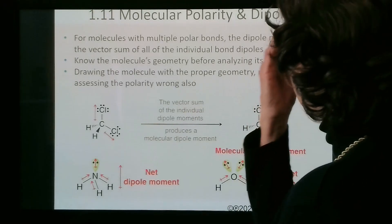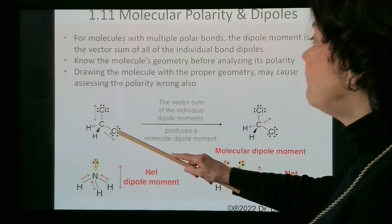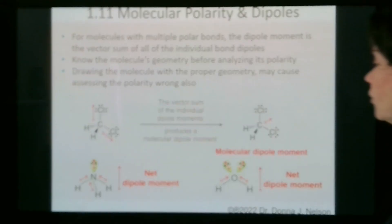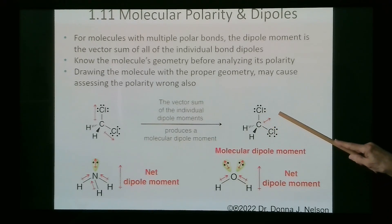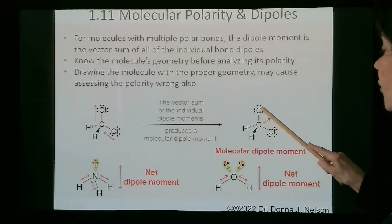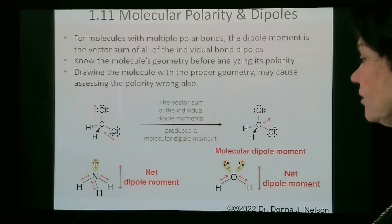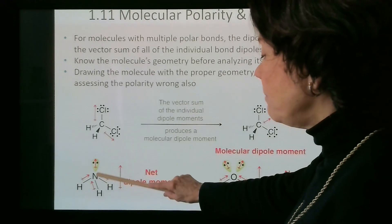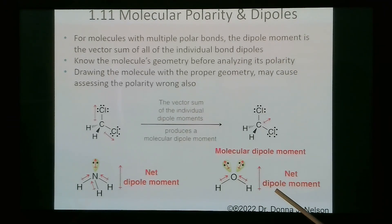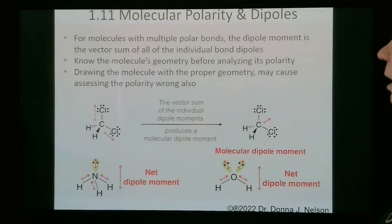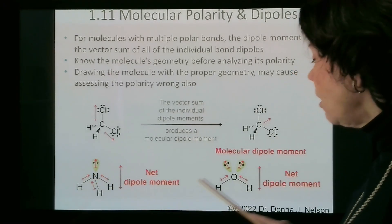For molecules with multiple polar bonds, the dipole moment is the vector sum of all the individual dipole moments. Each one of these bonds will be polarized, and the molecular dipole moment is the sum — you can see the arrow bisecting the two carbon-chlorine bonds. Here is the net dipole moment for ammonia, and the net molecular dipole moment for water is the vector sum of all its bond dipoles. Nitrogen and oxygen are highly electronegative atoms, so electron density is pulled onto those from their hydrogens.